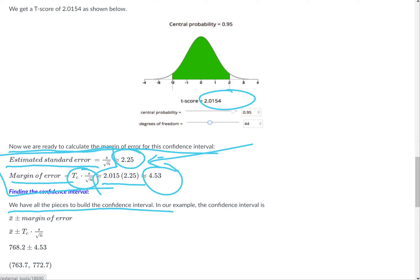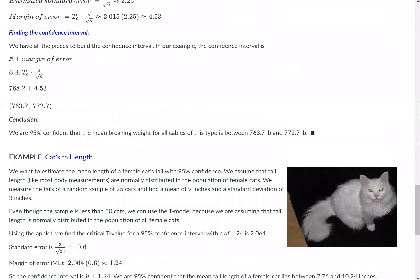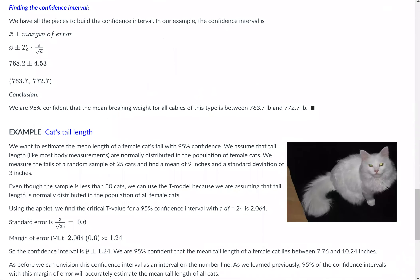Now we'll find the confidence interval. We have all the pieces to build the confidence interval. It's x̄, the sample mean, plus or minus the margin of error. The sample mean was 768.2 plus or minus 4.53.